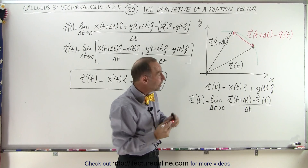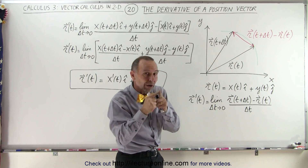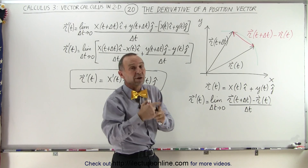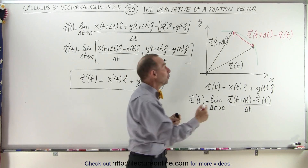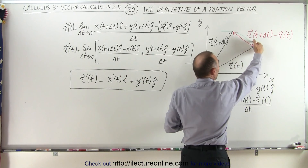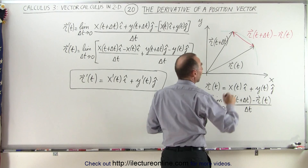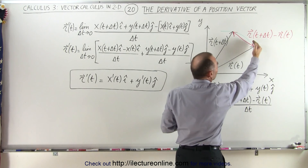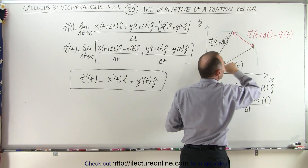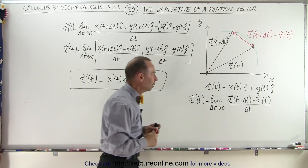And of course in the limit, as delta t goes to zero, the direction of that vector will be exactly the same as the direction that the particle will have along that path right here. And you can see that that vector — that difference between these two — will be perpendicular to your position vector.